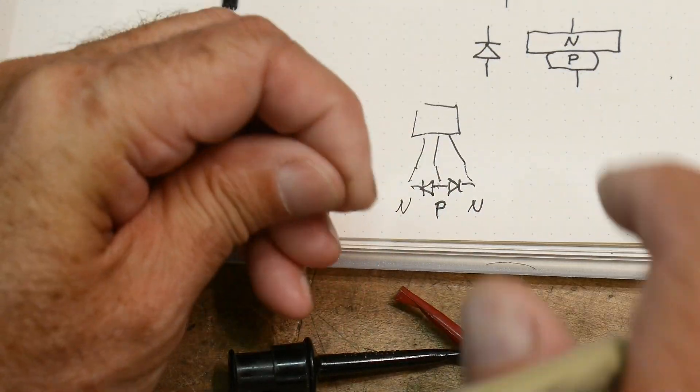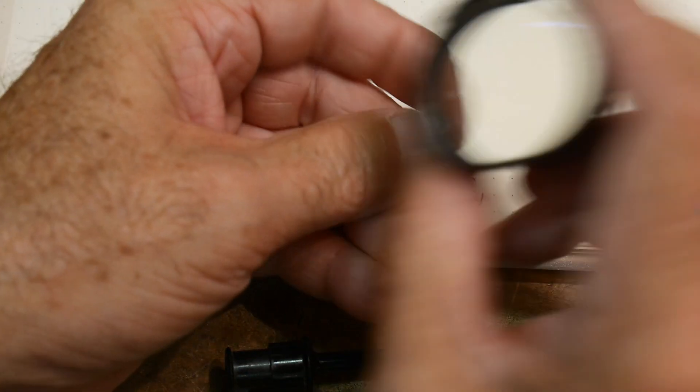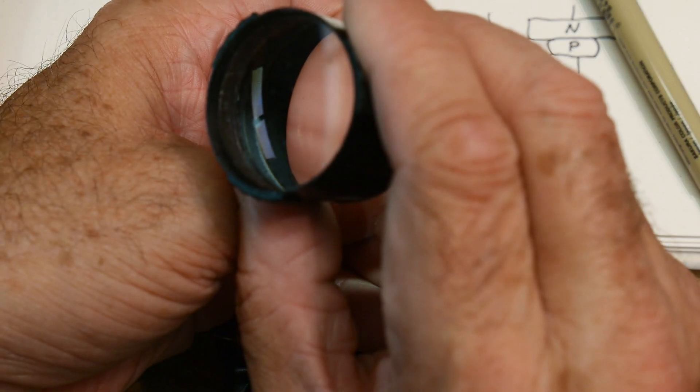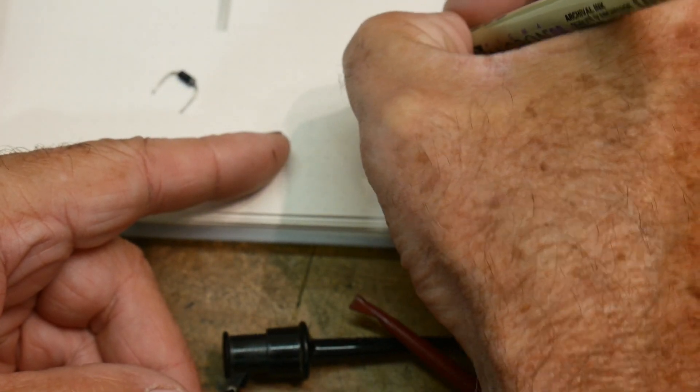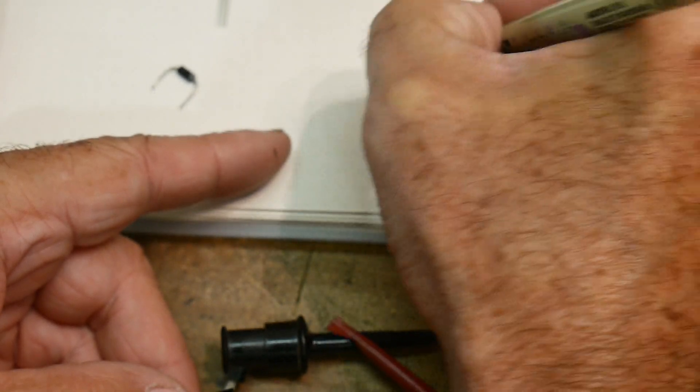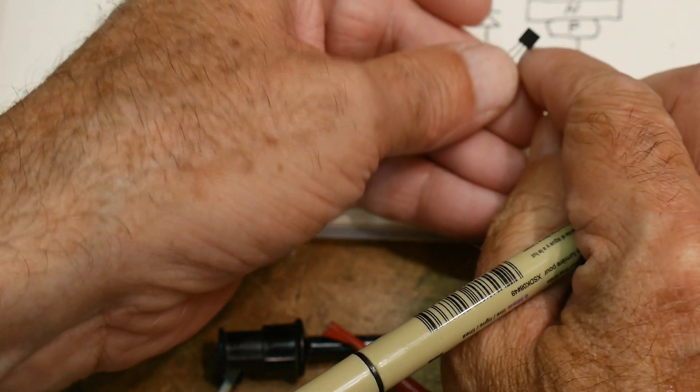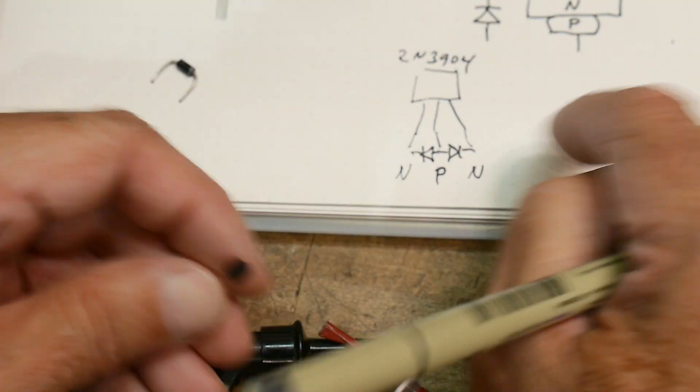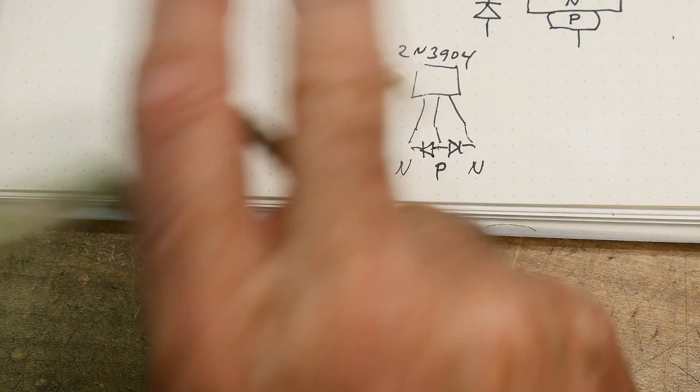And let's double check, because I think these are marked. So let's read it, and it says this transistor is a 2N3904. And then we could get a datasheet and we could confirm that, yeah, that's an NPN transistor.